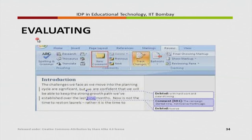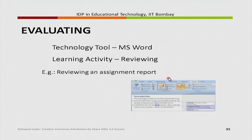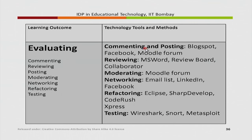We now move to the evaluating phase. The technology shown is MS Word, and the specific activity is reviewing. As a teacher, if you review a student's assignment report, you can use the track changes functionality of MS Word to give your comments. Some other learning activities at the evaluating level are commenting and posting, moderating, networking, refactoring, and testing. At an evaluate level, the tool provides facility to decide on something, think about it, and give a judgment about the activity.